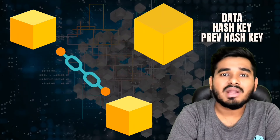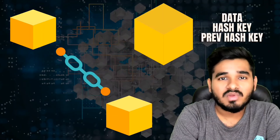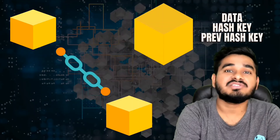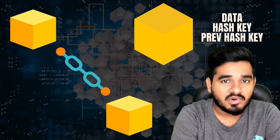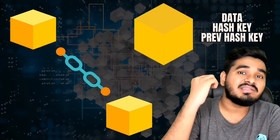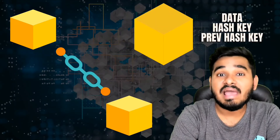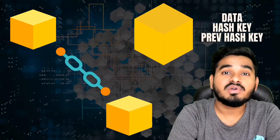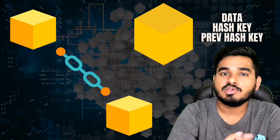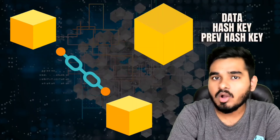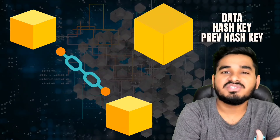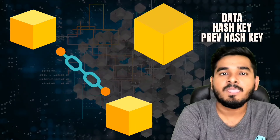How does blockchain actually work? You can see that multiple blocks are connected in a network. Each block contains the data, the hash key, and also the previous block's hash key. It also contains the transaction history. The advantage is that if some change happens in the blockchain — even with someone's consent — it will be recorded securely, and you will know about it easily.